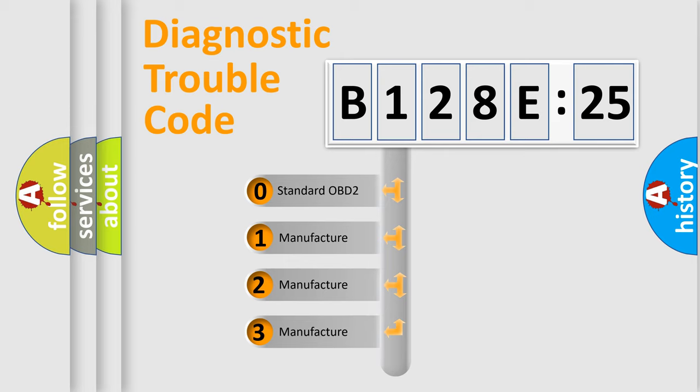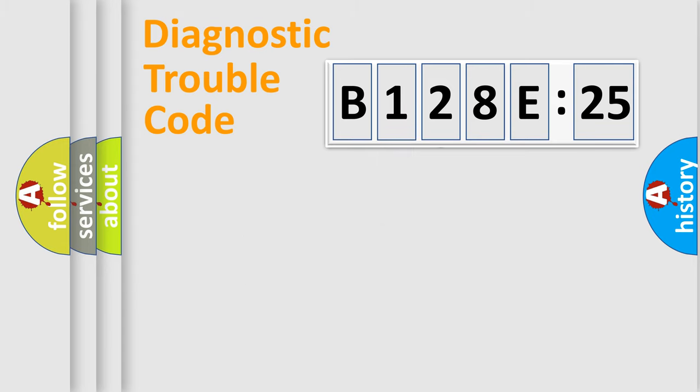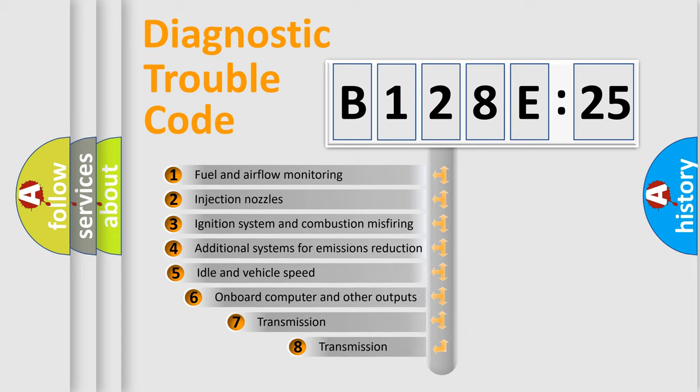If the second character is expressed as zero, it is a standardized error. In the case of numbers 1, 2, 3, it is a more manufacturer-specific expression of the car-specific error.